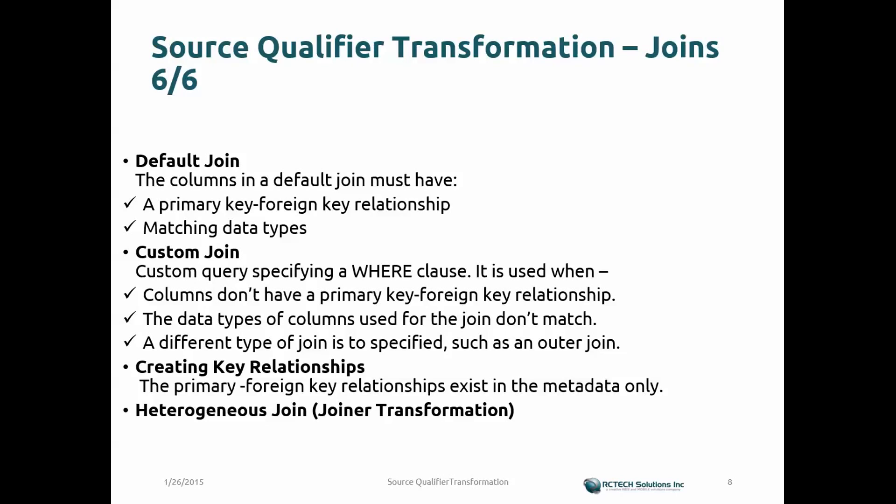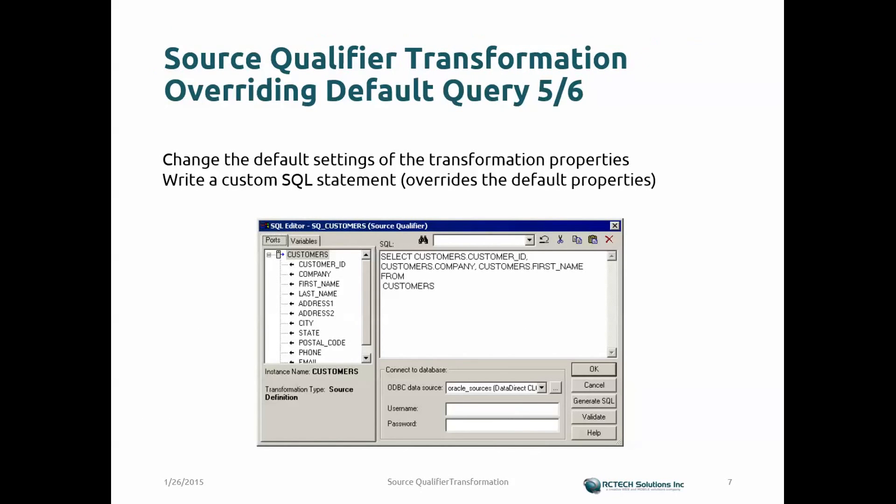You'd use a custom join when data types of the join columns don't match, or when you need different types of joins such as outer joins. The custom join option essentially lets you apply a WHERE clause with additional functionality in your SQL statement.